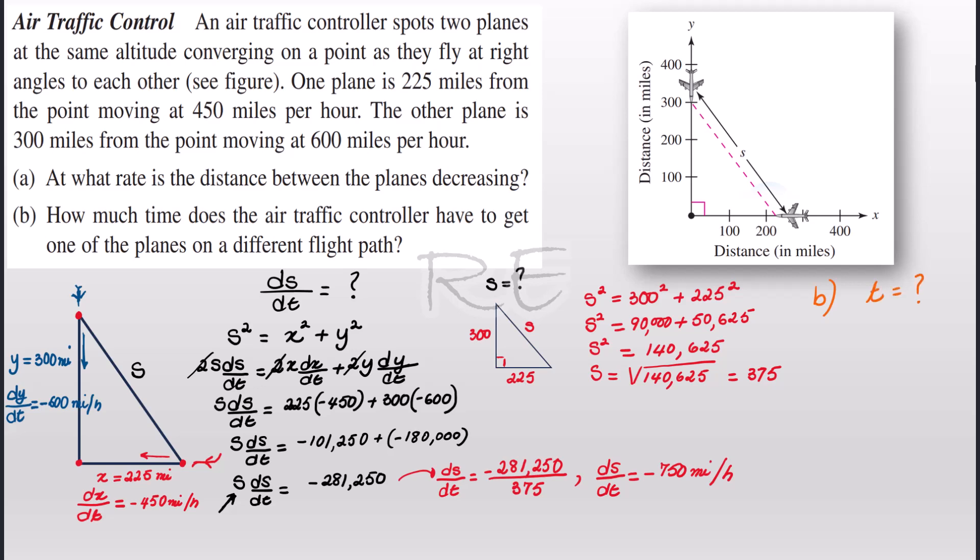Now part B asks us for the time before they collide, so that's the time left for the traffic controller to put the planes on a different flight path. Distance is equal to rate times time and we know that the distance between the two planes is 375 miles. We also know that the rate of decrease is 750 miles per hour. To calculate the time left we will divide the distance which is 375 miles by the rate of decrease but in absolute value because time cannot be negative. So we will divide it by 750 miles per hour so we will get 0.5, so half an hour which is about 30 minutes.